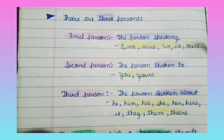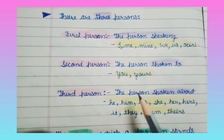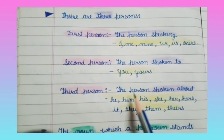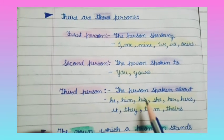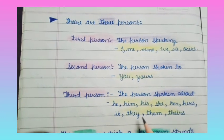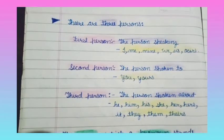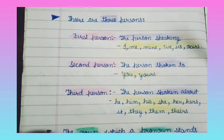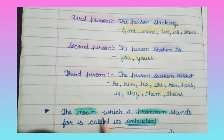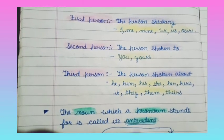Second person is: you, yours. Third person is: he, him, his, she, her, hers, it, they, them, theirs. These are the three types of person used in personal pronouns.